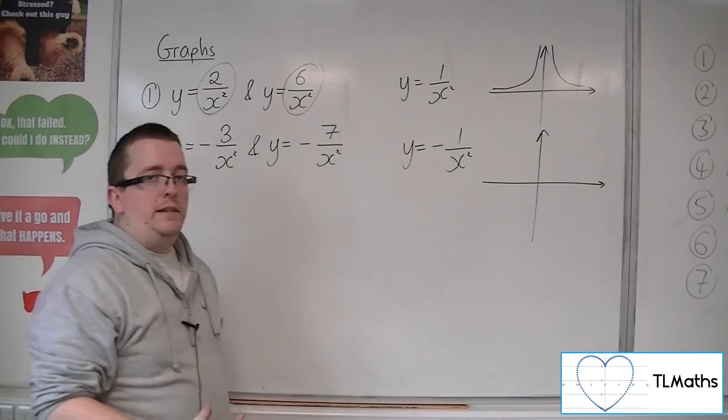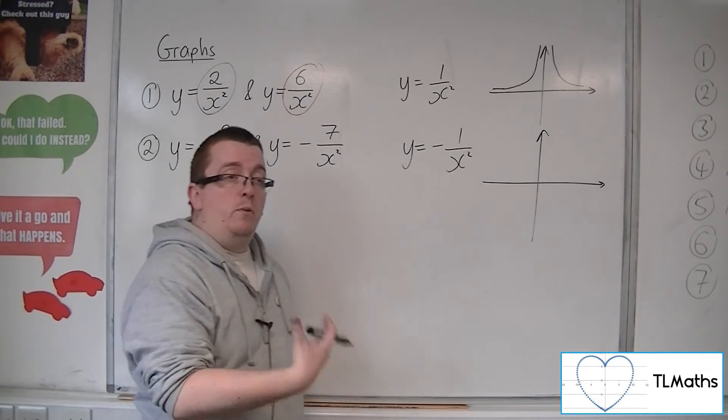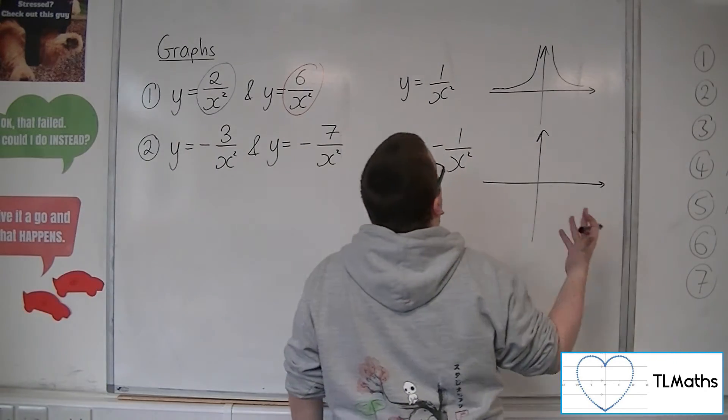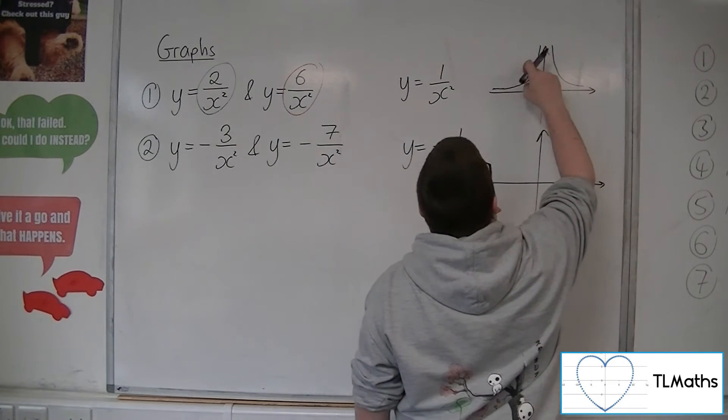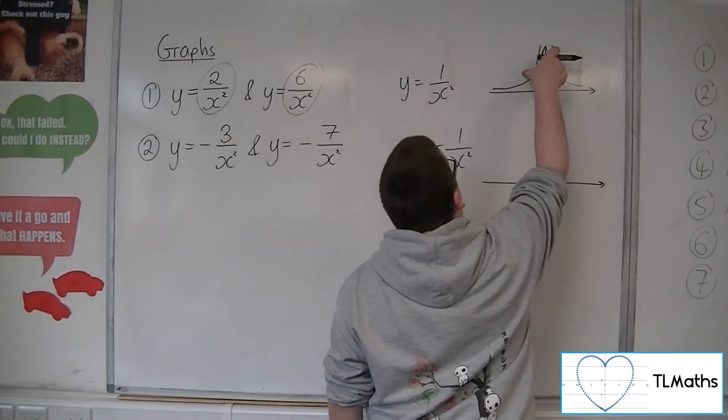that means that the y values of the graph previously will be made negative, will change their sign. So both of these parts of the graph are above the x-axis,